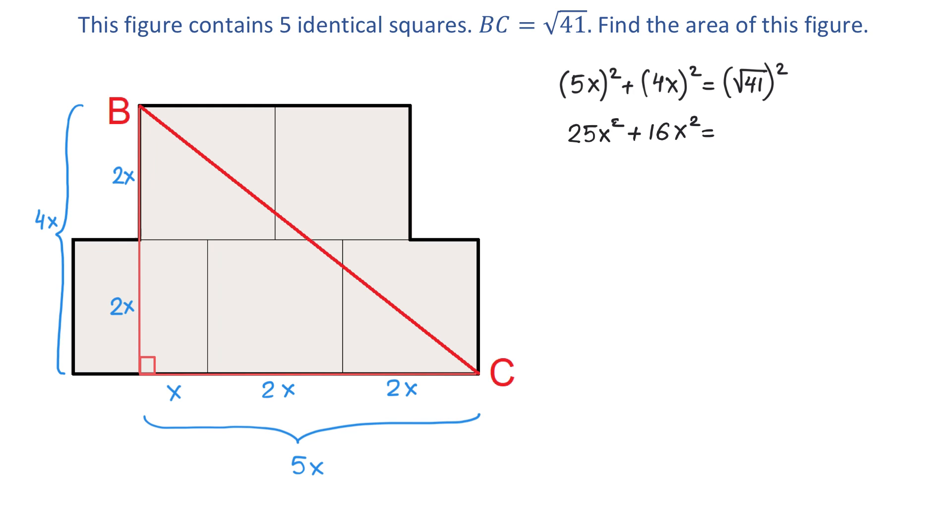On the right side, the square root and the second power will cancel each other and we will have 41. Now, on the left side, 25X squared plus 16X squared is 41X squared equals 41. And if we divide both sides by 41, then we will get that X squared equals 1 or X equals 1.